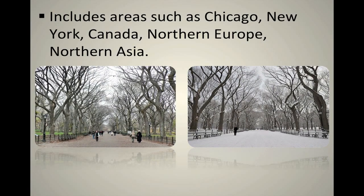Here we can see a picture of Central Park. I found two similar pictures to emphasize that the summer, spring, and fall in a continental climate is pretty similar to a temperate climate here in Little Rock. However, during wintertime in New York City, they have snow on the ground for more than just a couple of days like we do here. Their winters are much colder and they receive way more snow. Other continental climate places include Chicago, Canada, Northern Europe, and Northern Asia.